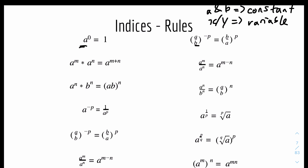The first rule is A to the power of 0 equals 1. It could be any constant — for example, 9 to the power of 0 equals 1, or 1000 to the power of 0 equals 1. Anything to the power of 0 equals 1.